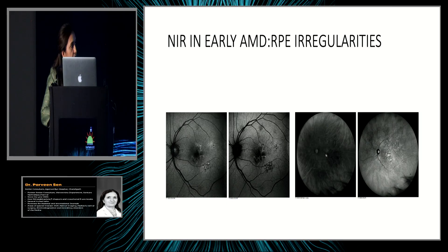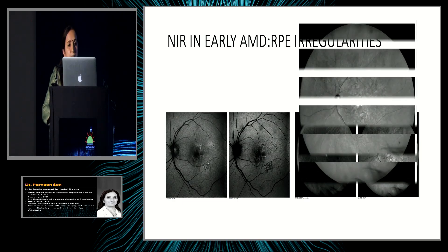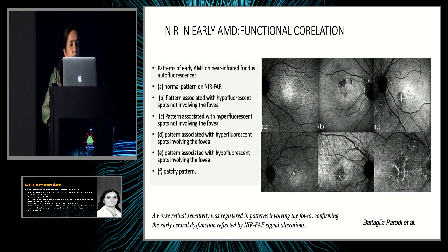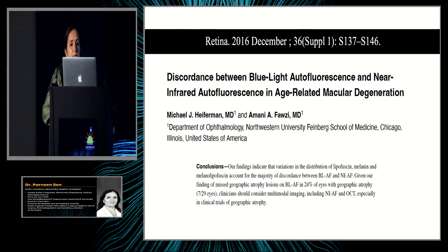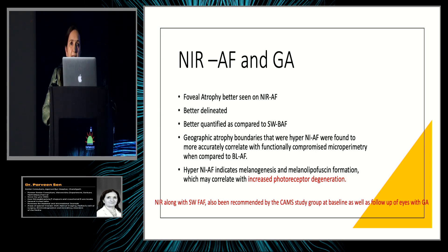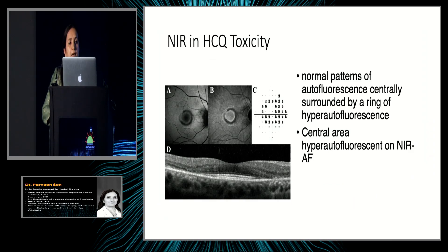The short-wave image may show no information at the fovea, while reflectance reveals irregularities. Based on this, a classification has been developed for AMD. Importantly, a key paper found that almost 24–27% of eyes had geographic atrophy missed when only short-wave autofluorescence was used. The clinical recommendation is that NIR, which is freely available on most OCT platforms as an associated reflectance image, should be used alongside short-wave for evaluating geographic atrophy.